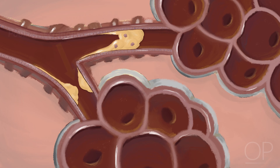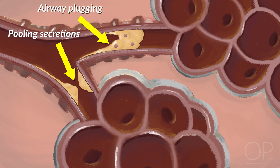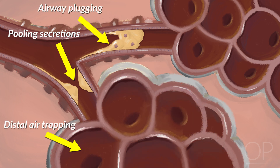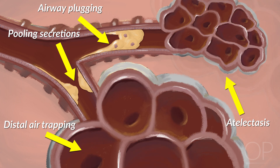Secretions tend to pool because of the loss of the ciliated epithelium, leading to airway plugging, distal air trapping, and atelectasis.